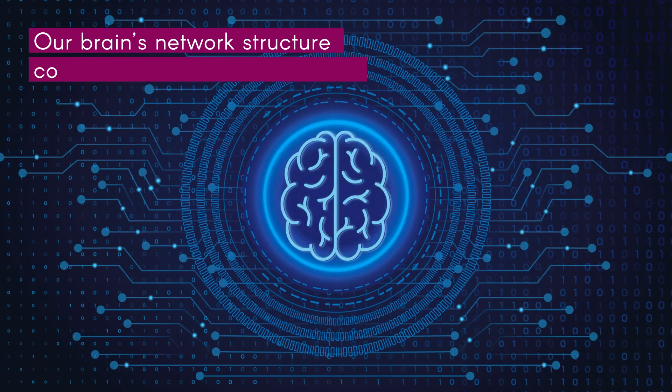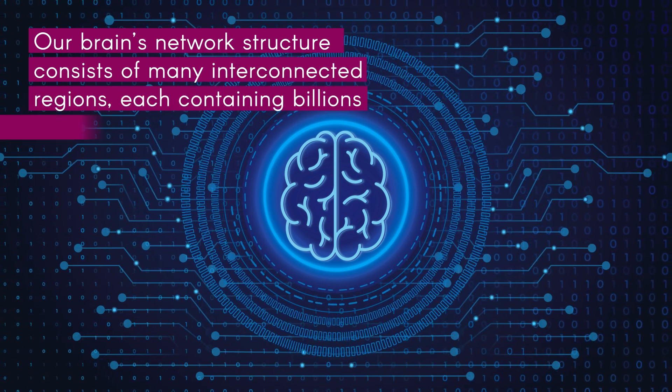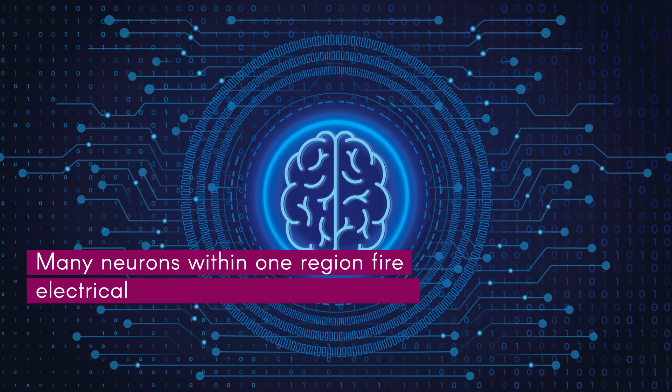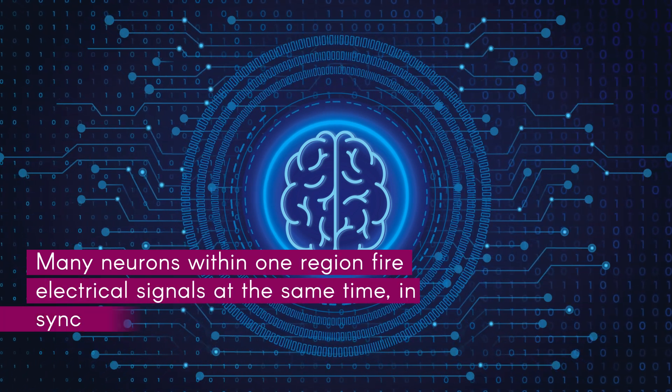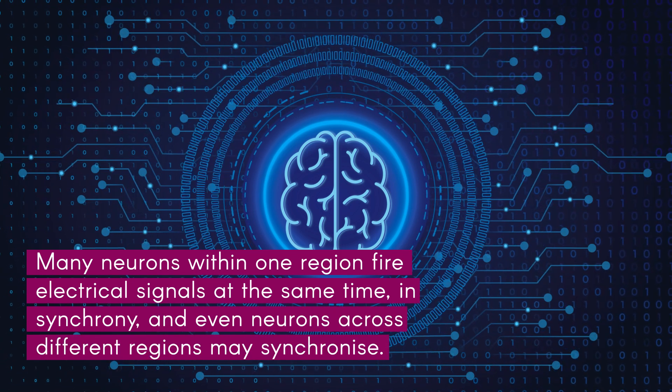Our brain's network structure consists of many interconnected regions, each containing billions of neurons. Many neurons within one region fire electrical signals at the same time, in synchrony, and even neurons across different regions may synchronize.